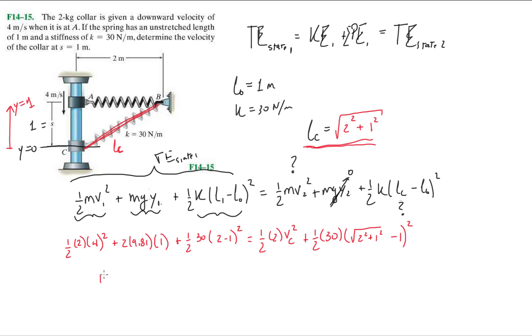So you're going to end up with the following: 16 plus 19.62 plus 15, that's equal to Vc squared plus 15 times the square root of, that's 5 minus 1. All of this is equal to 1.528. Move everything to the left-hand side and isolate Vc. And you're home free from here, which is equal to 5.26 meters per second.